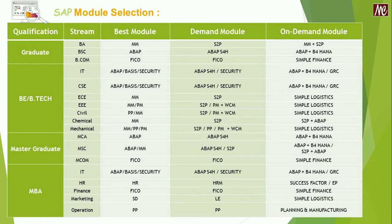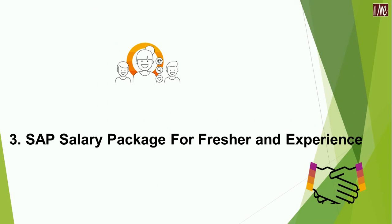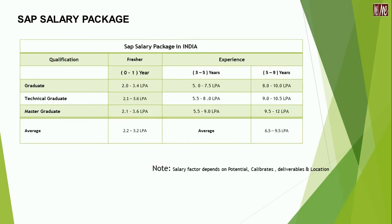Going ahead, we will discuss the SAP salary package for fresher and experienced profiles. The presented tabular form will clearly indicate what salary package is available under the leg of fresher candidates and experienced candidates. Currently, based on qualification and experience, we segregate two tabs. One is called fresher — those who come under 0 to 1 year. If you are a normal graduate falling under the fresher category, then your salary should be a minimum of 2 lakhs per annum and a maximum of 3.4 lakhs per annum.